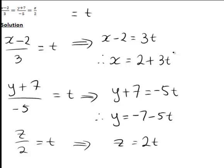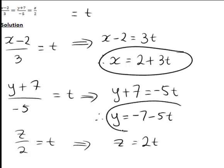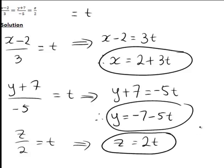So these equations here: x equals 2 plus 3t, y equals negative 7 minus 5t, and z equals 2t. Together, these are the scalar parametric equations of our straight line.